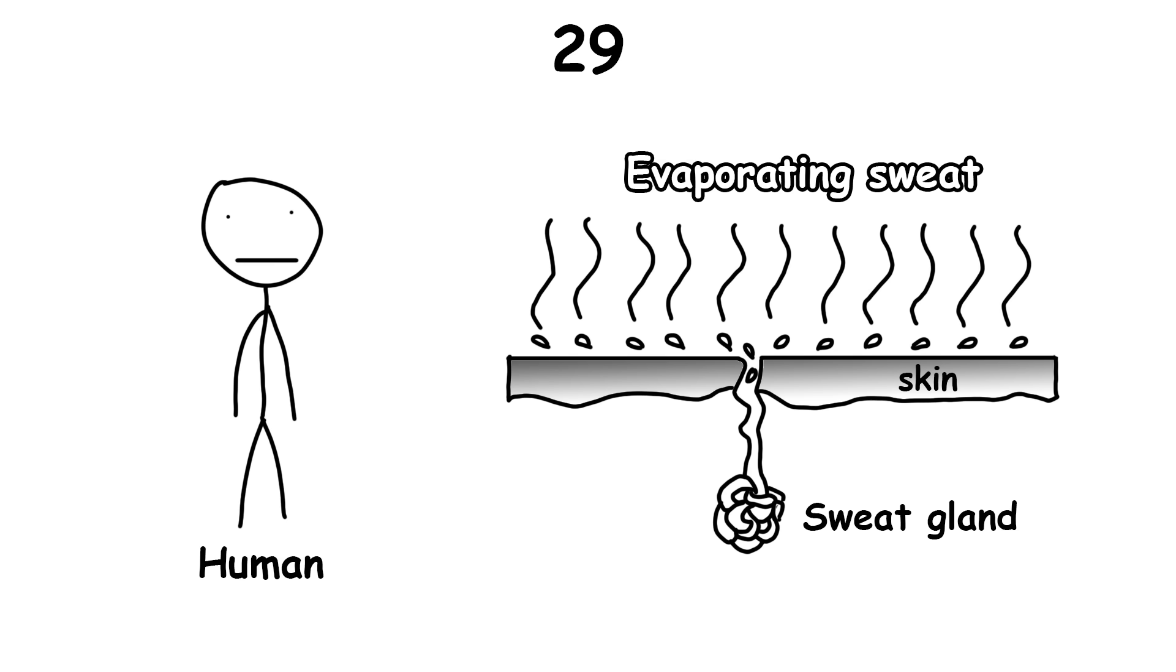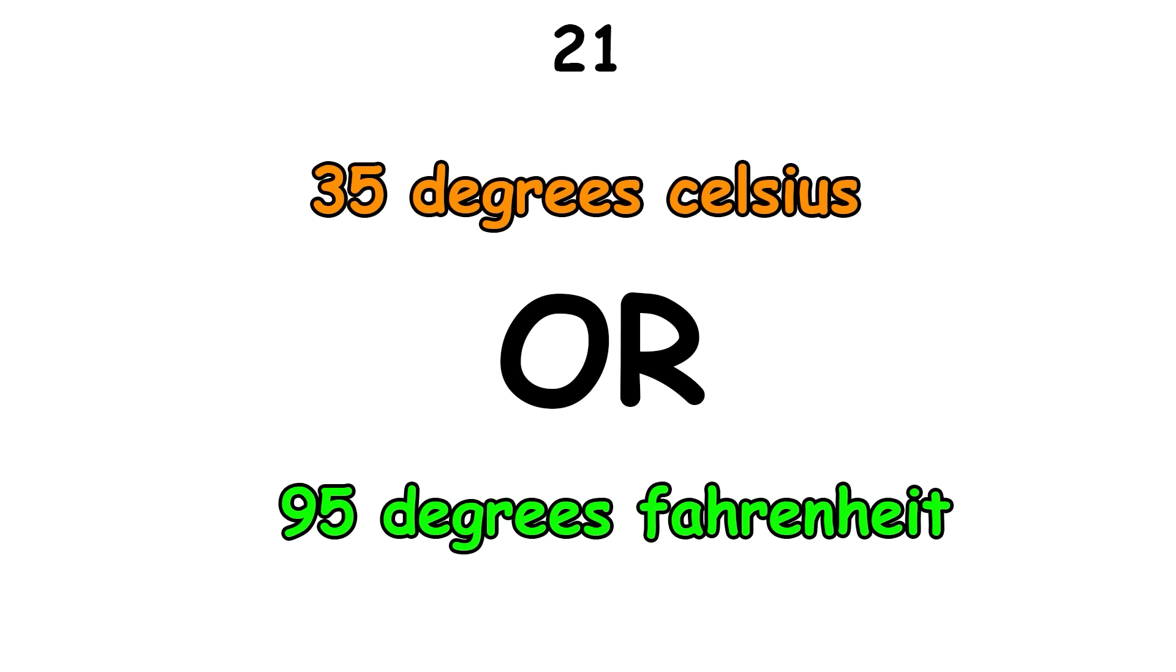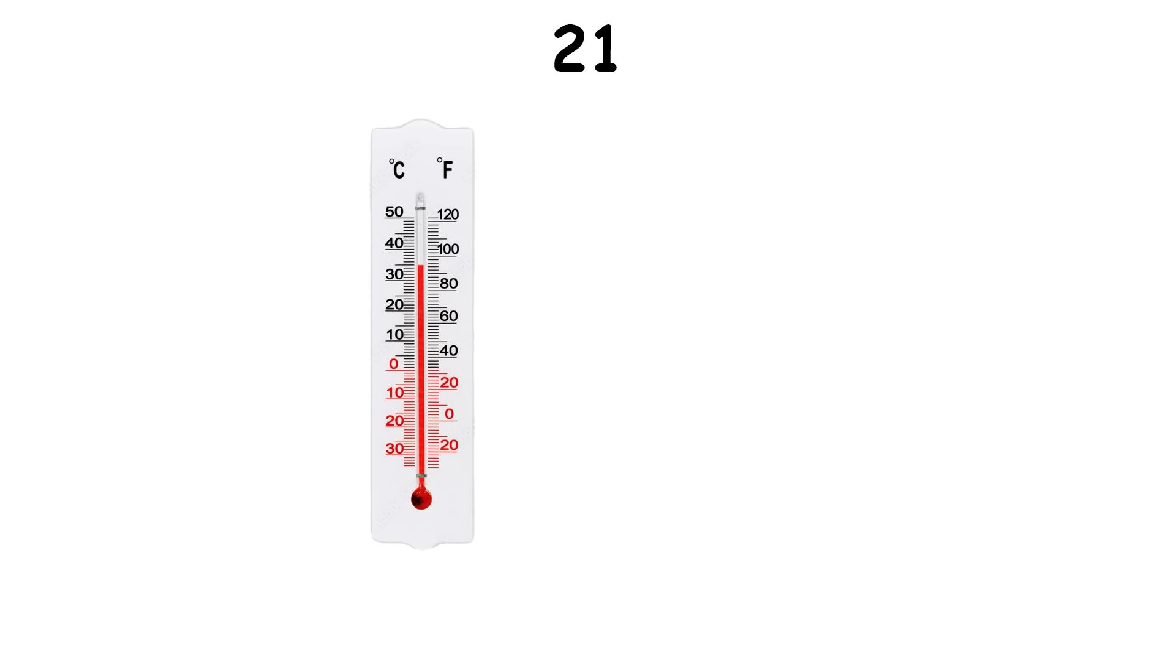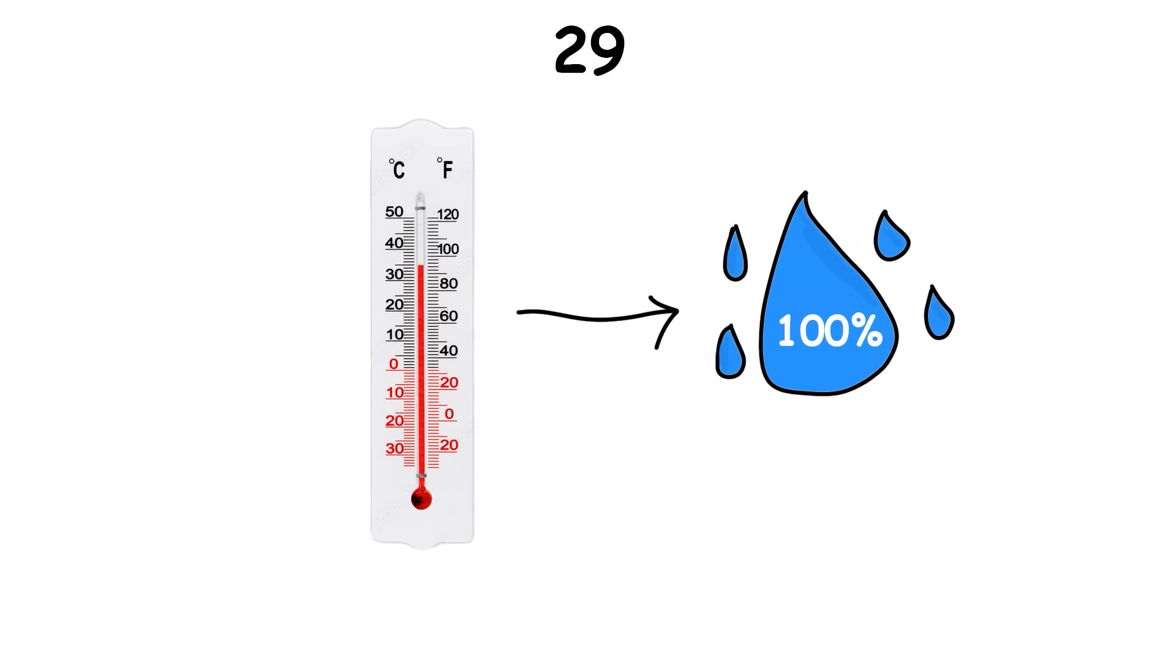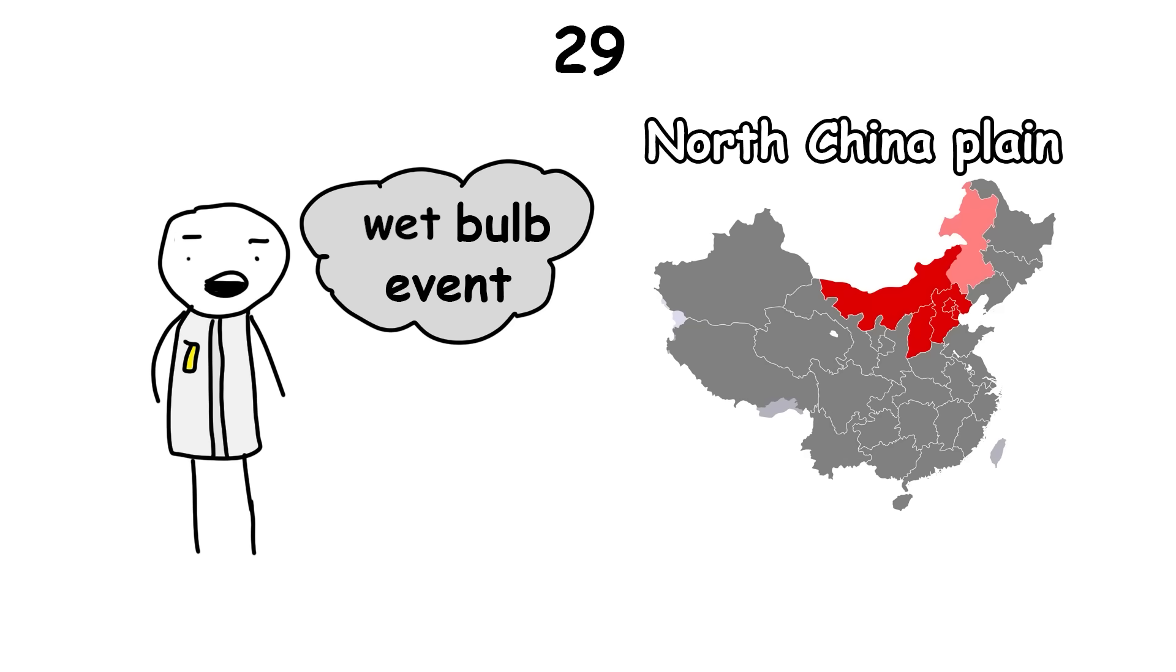Humans rely on evaporating sweat to stay cool, but when humidity gets too high, sweat doesn't evaporate. This makes relatively low heat temperatures deadly, like 35 degrees Celsius or 95 degrees Fahrenheit. When those temperatures are reached with 100% humidity, it's called a wet bulb, and by 2050 scientists predict multiple wet bulb events in the North China Plain, where approximately 400 million people live.